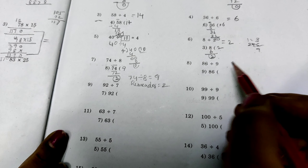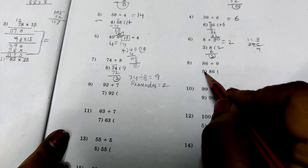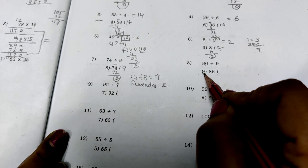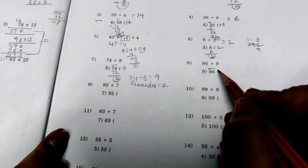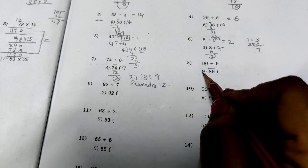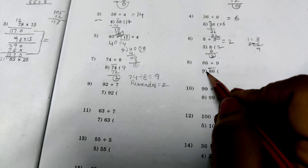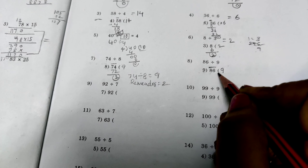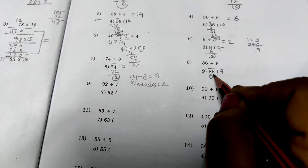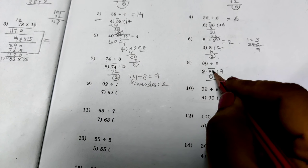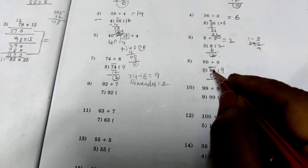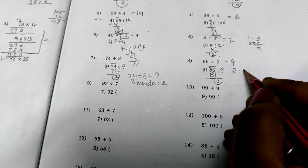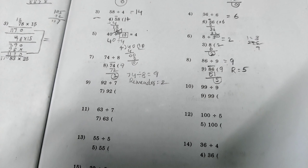Next problem: 86 divided by 9. When we take only 8, we can't subtract 9 from 8. So we are taking 2 digits — that is 86. How many times can we subtract 9 from 86? 9 times. So write 9 in quotient place. 9 nines are 81. 6 minus 1 is 5. 8 minus 8 is 0. Here quotient is 9. Answer is 9. Remainder is 5.